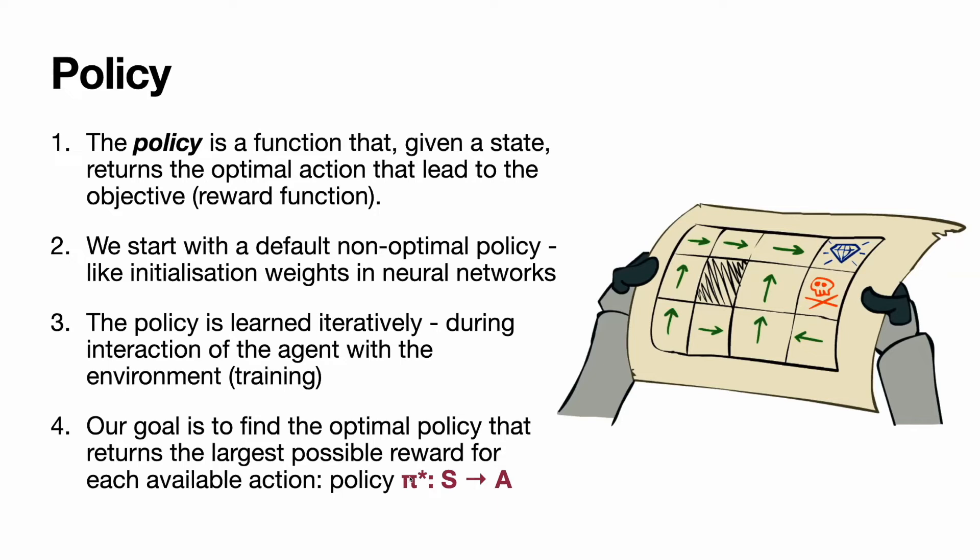It is denoted as P star. The parameter is S, the outcome is A. For all states, we have to know optimal actions.